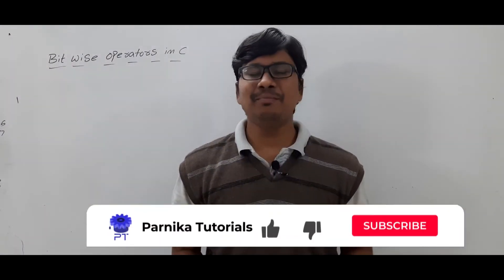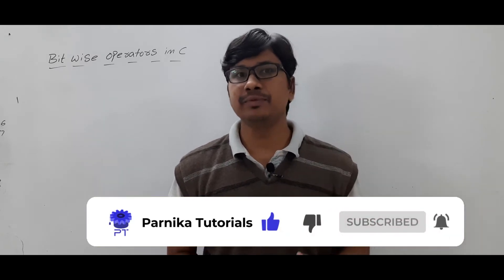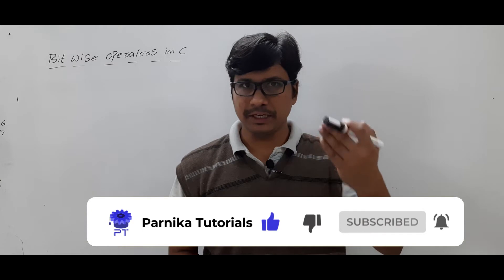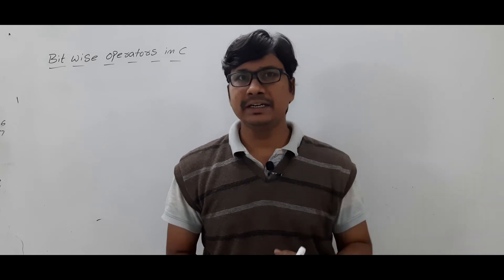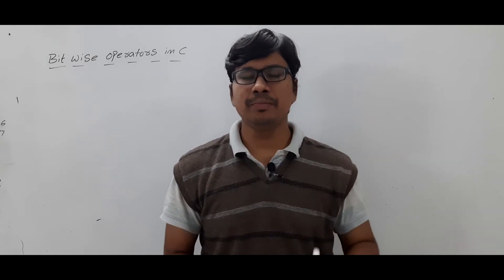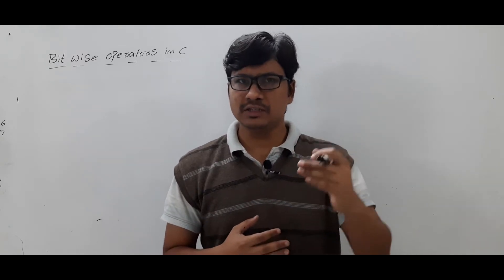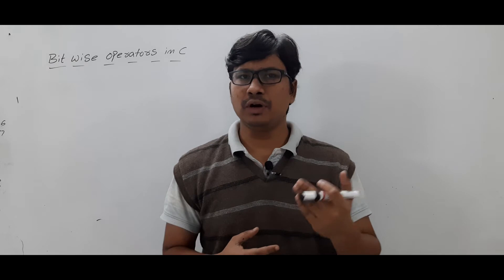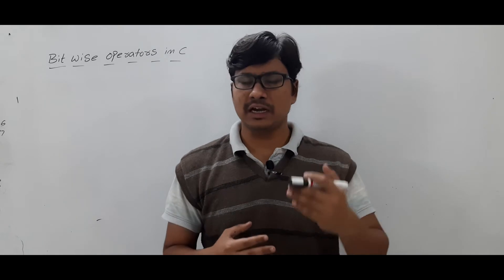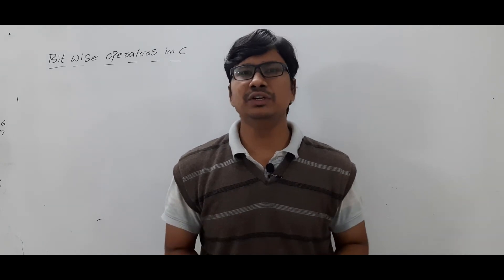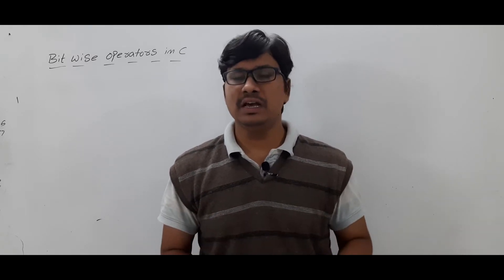Good morning friends, welcome back to Panika's tutorials. In C programming, we have eight different types of operators: arithmetic, relational, logical, assignment, increment and decrement, conditional, bitwise, and special operators. Out of these eight, I already discussed six operators. In this video, I want to discuss about bitwise operators. We have totally six bitwise operators.